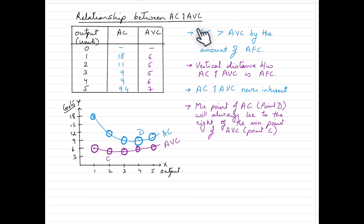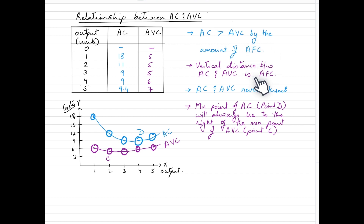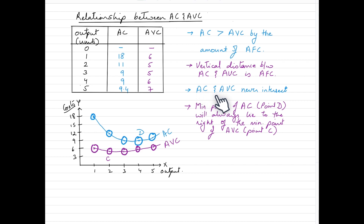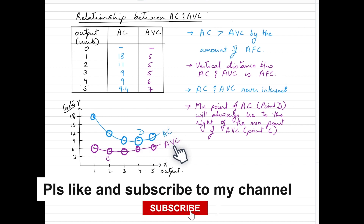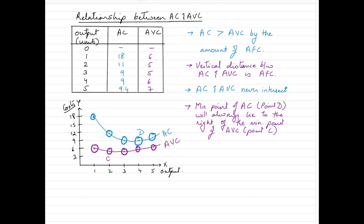So the key things to remember about the relationship between AC and AVC are: AC will always be greater than AVC by the amount of AFC; the vertical distance between AC and AVC is depicted by AFC and will always be declining; AC and AVC will never intersect because average fixed costs are never zero; and both AC and AVC curves are U-shaped curves. I'll meet you in another video with another topic — bye, take care!